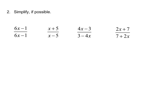Before we do anything else, let's review simplifying rational expressions. When you have an expression like (6x minus 1) over (6x minus 1), that simplifies to just 1 — they cancel out. When you have (x plus 5) over (x minus 5), that does not simplify to anything, so it just stays the same.